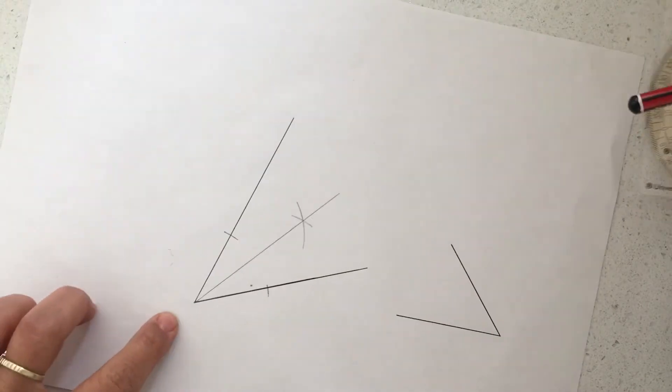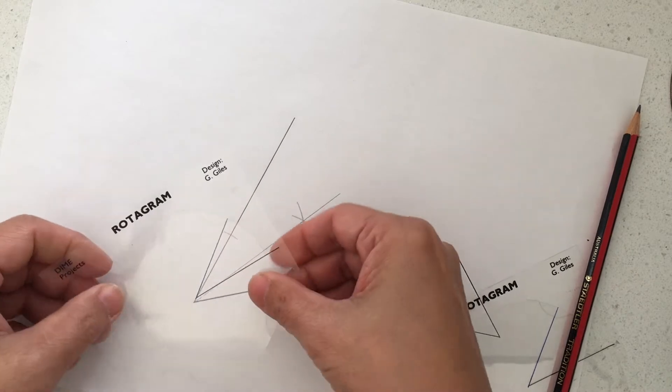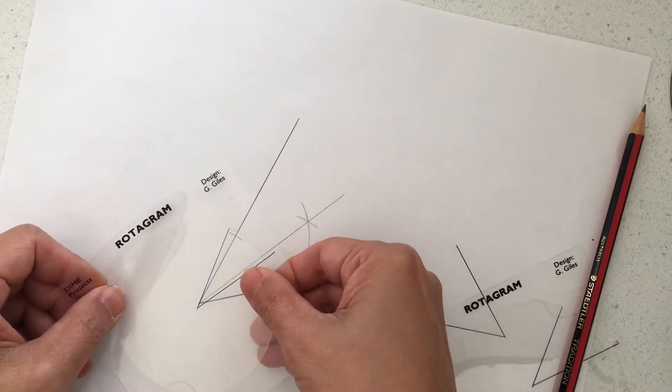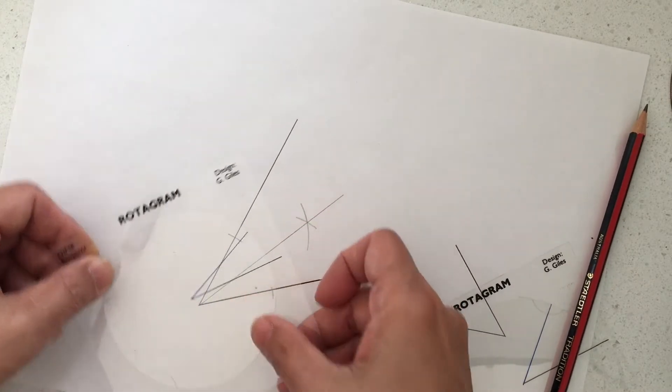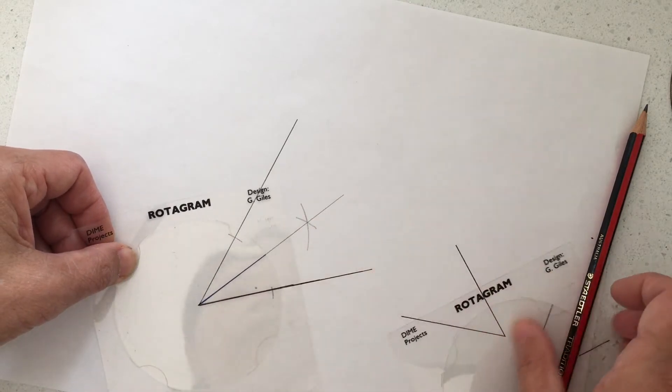You can actually see that they are bisect together and you can test it by using a protractor. This way, and I can turn it this way to show that they are exactly the same.